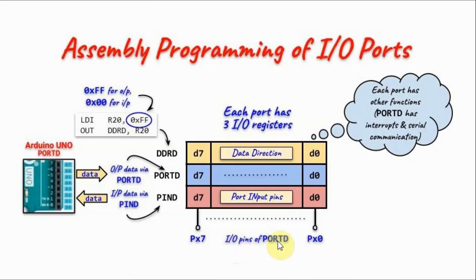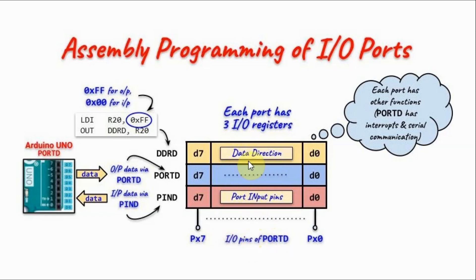Once we have determined the data direction of the port, the next step is to either output a byte from the microcontroller onto the pins of the port using the port register, or to input a byte from the pins into the microcontroller using the port input pins register.